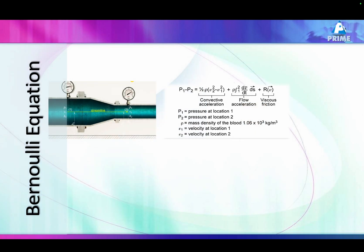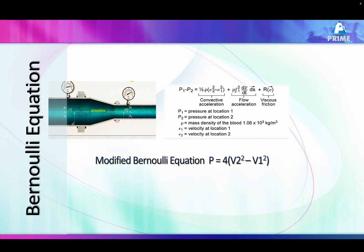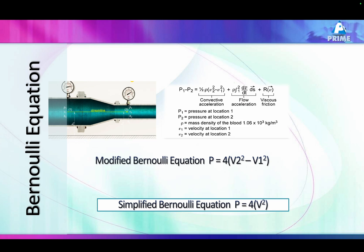How do we calculate the valve area based on gradients? We use the Bernoulli equation. It's a complex equation, but we have made many assumptions and simplifications. The modified Bernoulli equation says the pressure gradient across two chambers is 4V₂² minus V₁², where V₂ is the peak velocity and V₁ is the velocity before the stenosis. We presume V₁ is less than one meter per second and eliminate it, giving us the simplified Bernoulli equation: pressure gradient equals 4V².